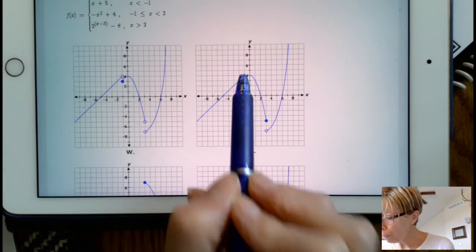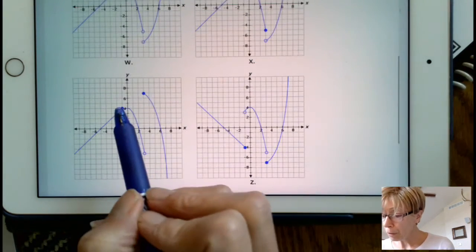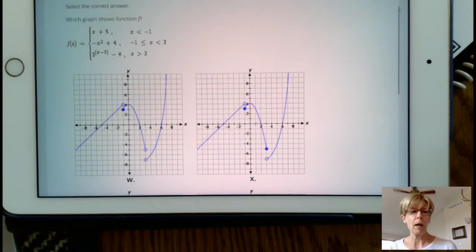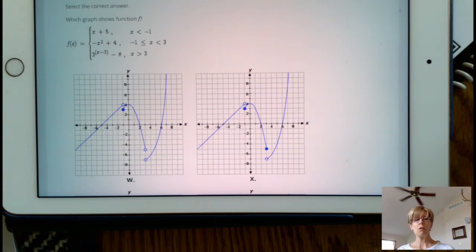the negative x squared plus 4. What we've got is less than or equal to x, less than 3. So at negative 1 on this graph, because these are the same, we're going to have a closed circle.